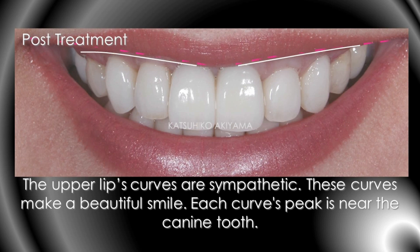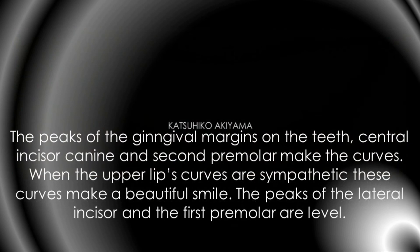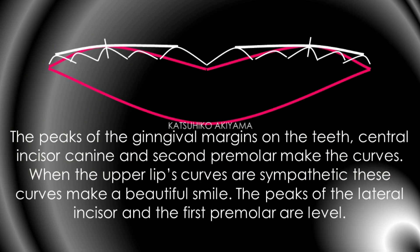Post-treatment: each curve's peak is near the canine tooth. The peaks of the gingiva margins on the teeth — central incisor, canine, and second premolar — make curves. When the upper lip's curves are sympathetic, these curves make a beautiful smile. The peaks of the lateral incisor and the first premolar are level.